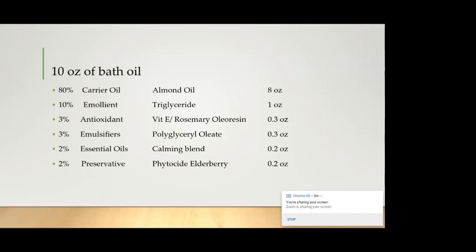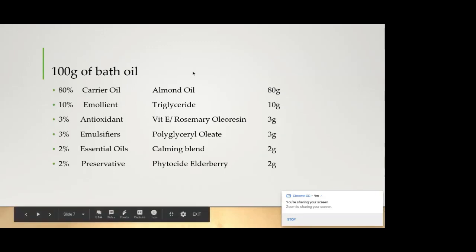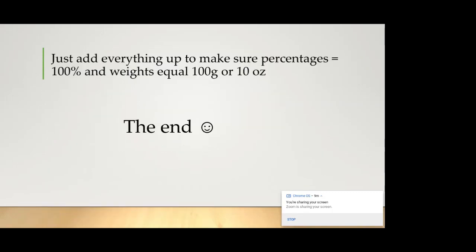Most emulsifiers are kind of oil-based or they can be dissolved in oil. So that's the 10 ounce of bath oil. If you were doing it in the grams version, you would do a hundred gram formula and then you'd do your calculations the same way. So 80% of 100 grams would be 80 grams, 10% of 100 grams would be 10 grams. Really as you can see it's a one-for-one equivalent which makes making your formula really easy and a lot less intimidating. And then you just want to make sure that everything adds up to 100 grams or to 10 ounces.